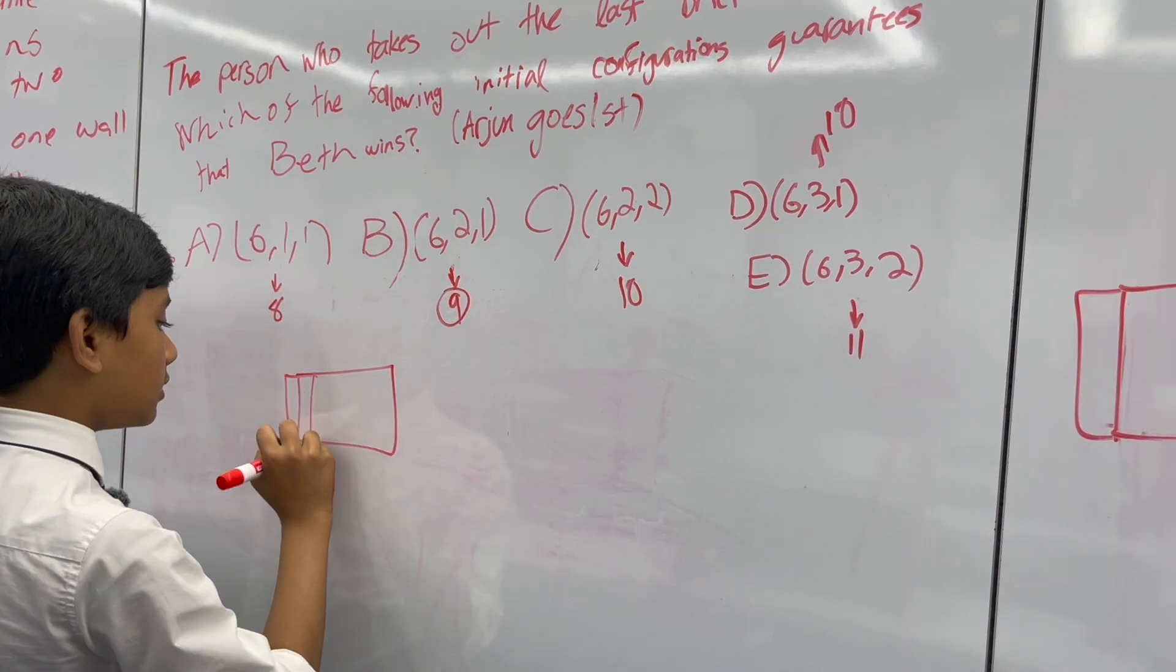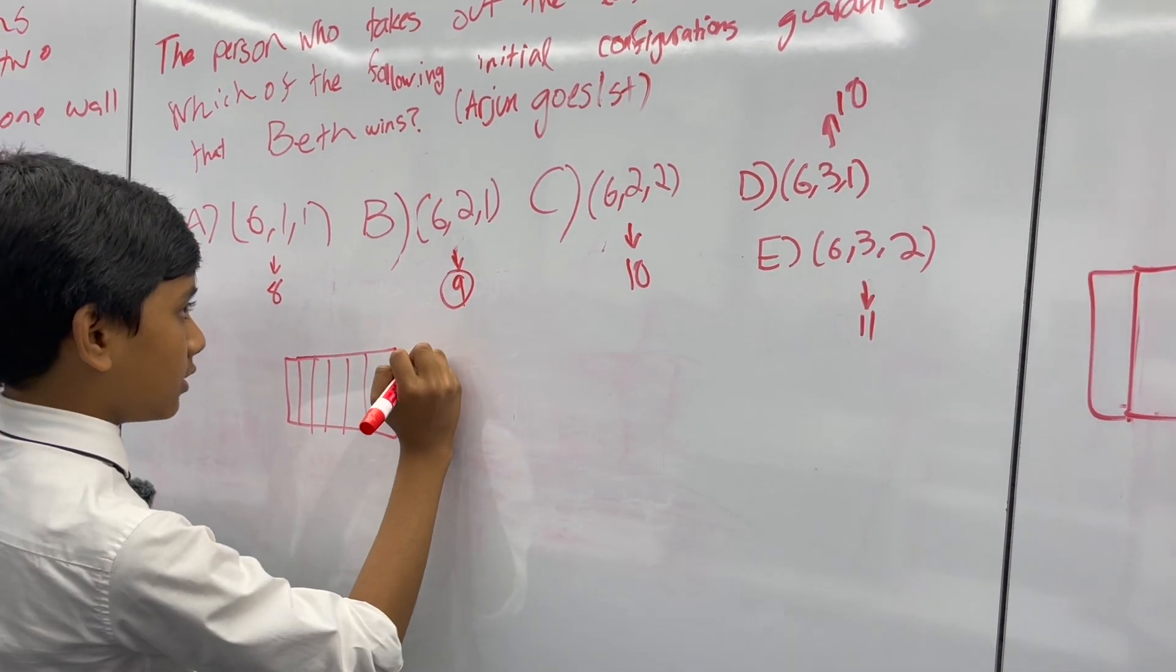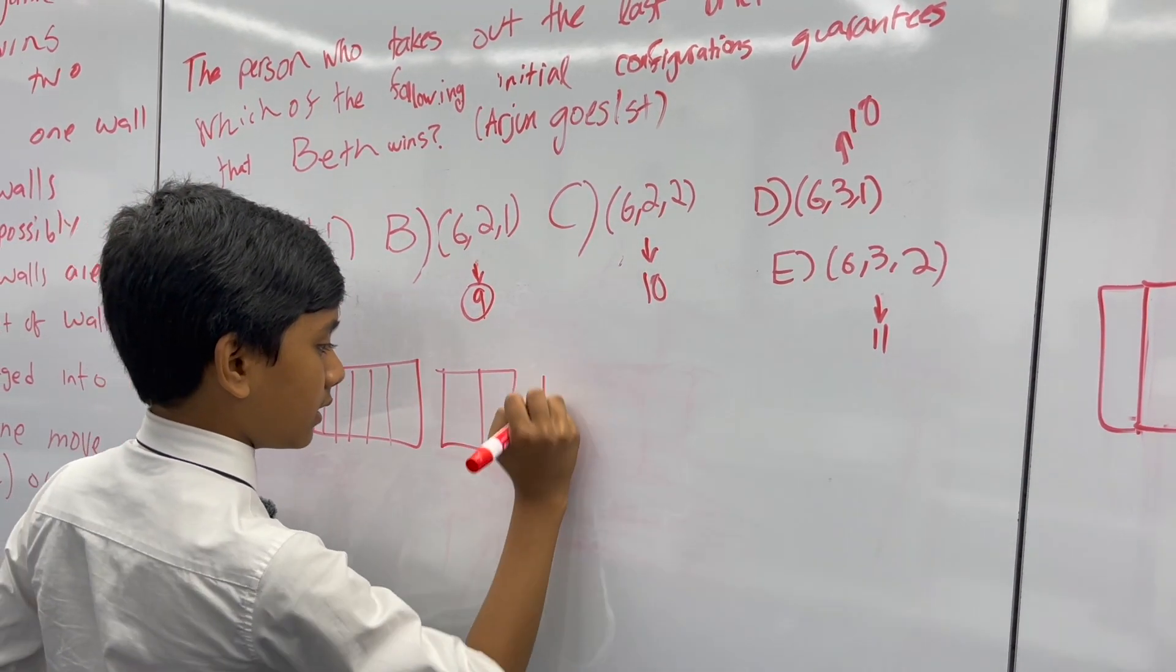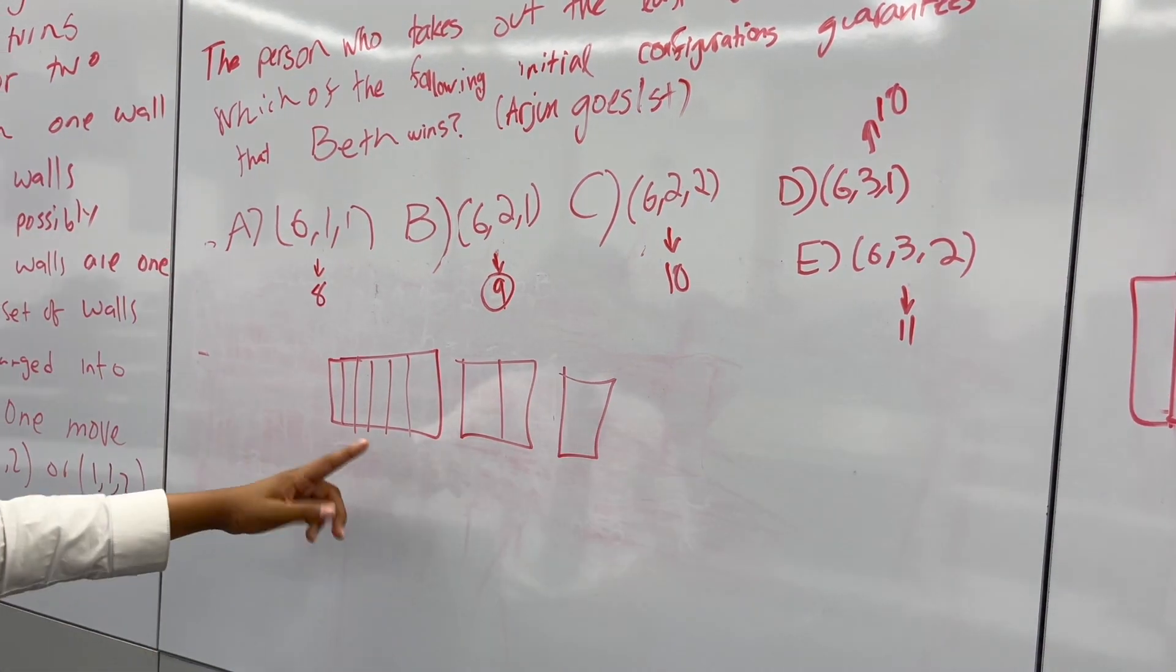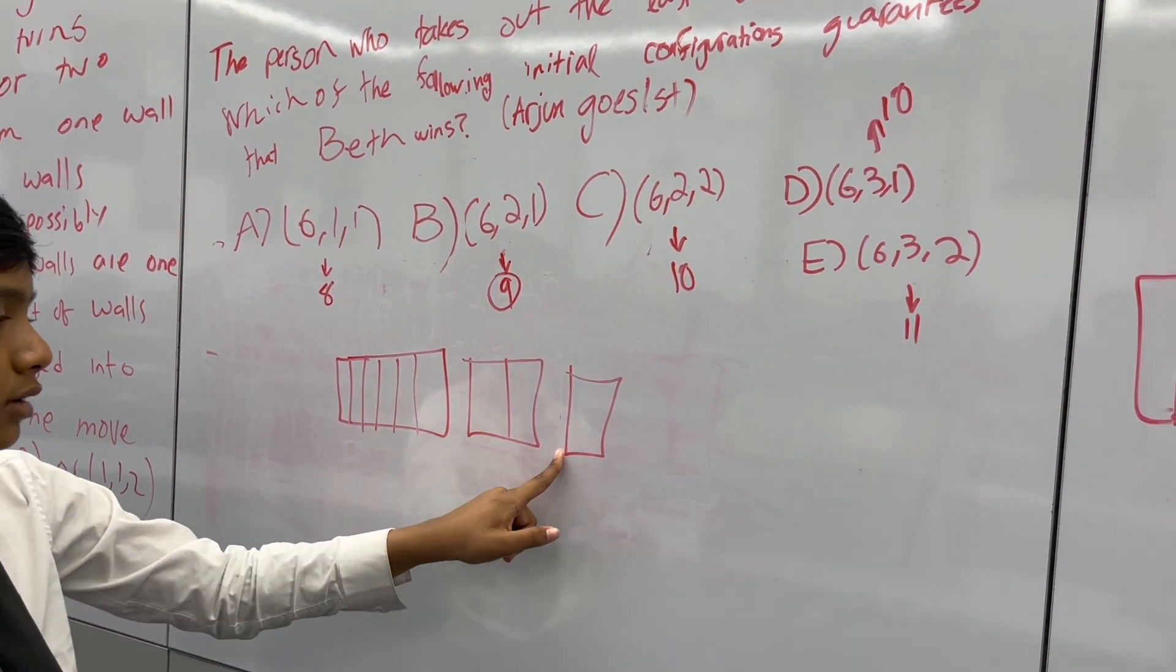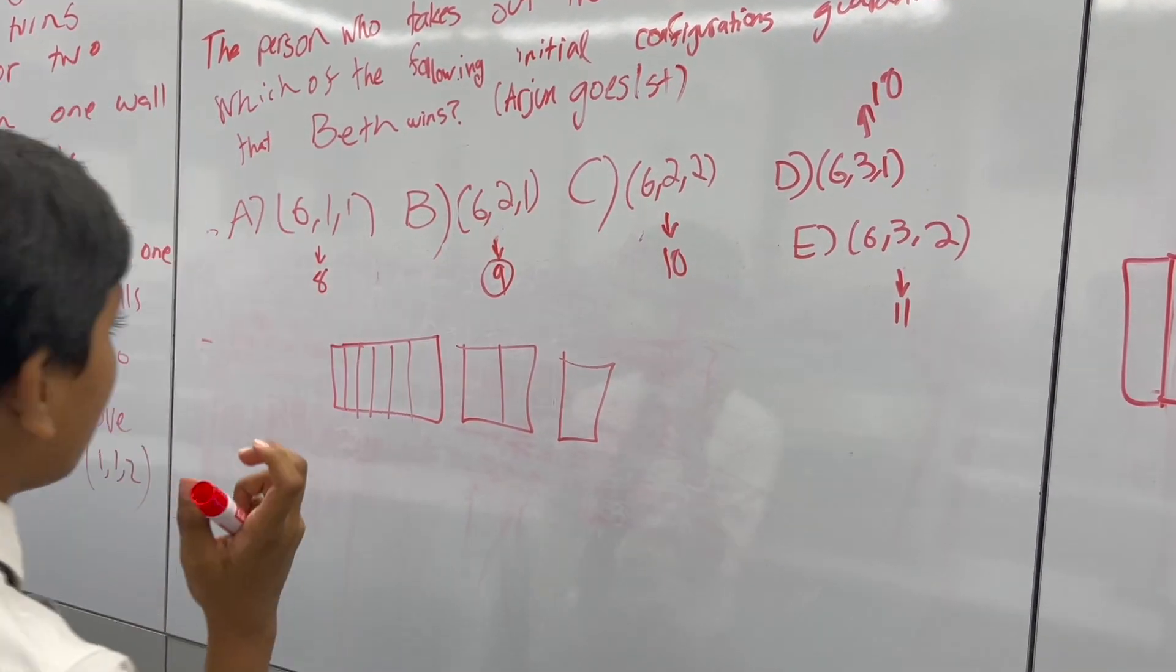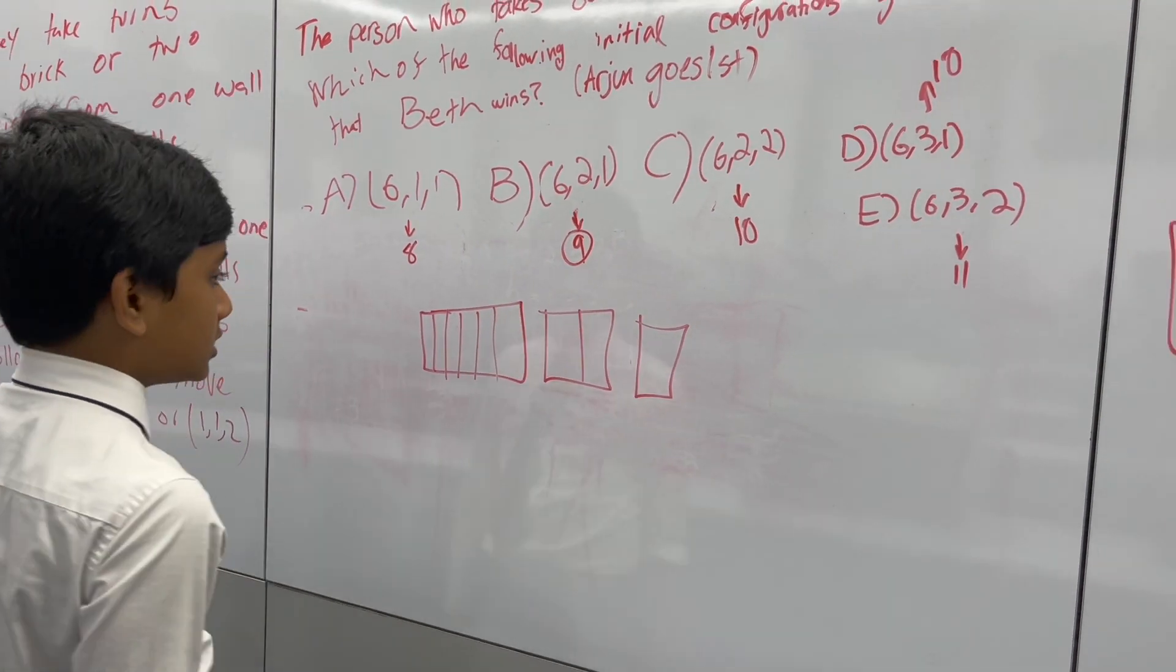Let's try drawing our configuration here, which looks a little bit like this: six bricks, then a gap, then two bricks, then another gap, and then one brick. And that sums up to nine bricks in total.